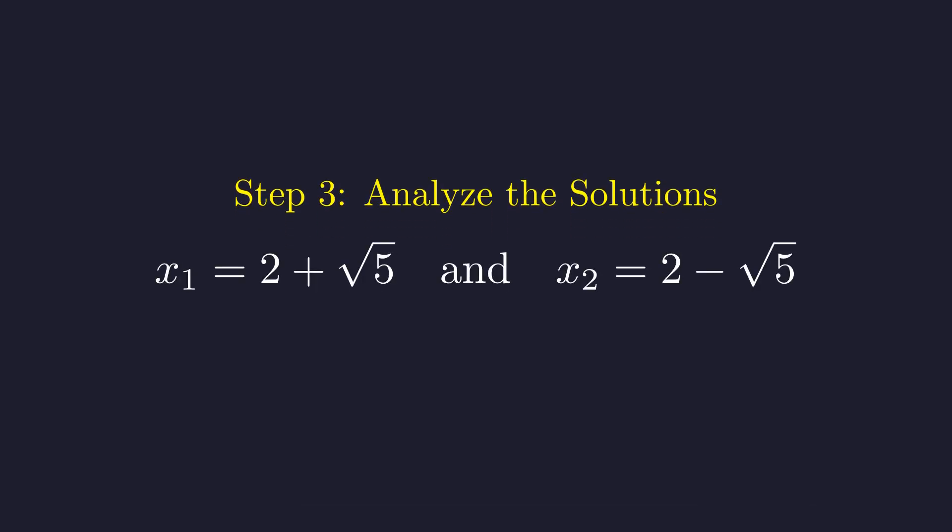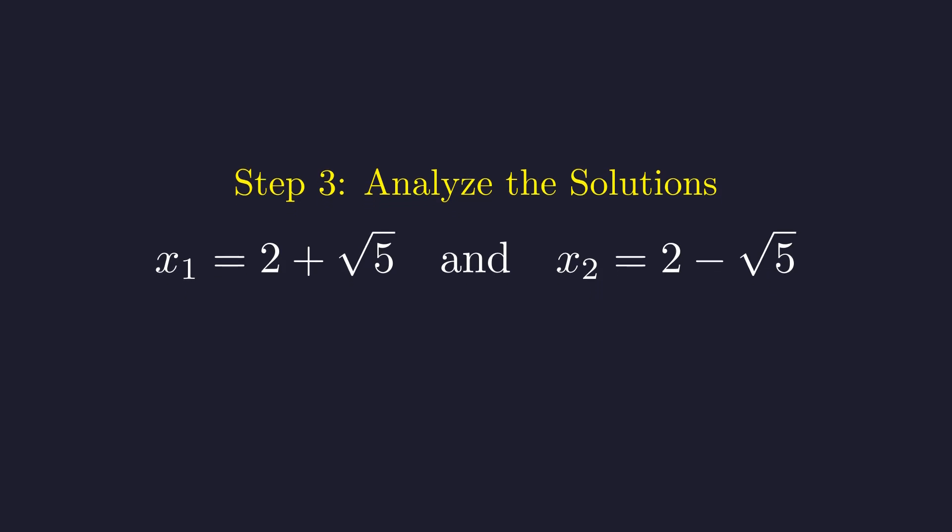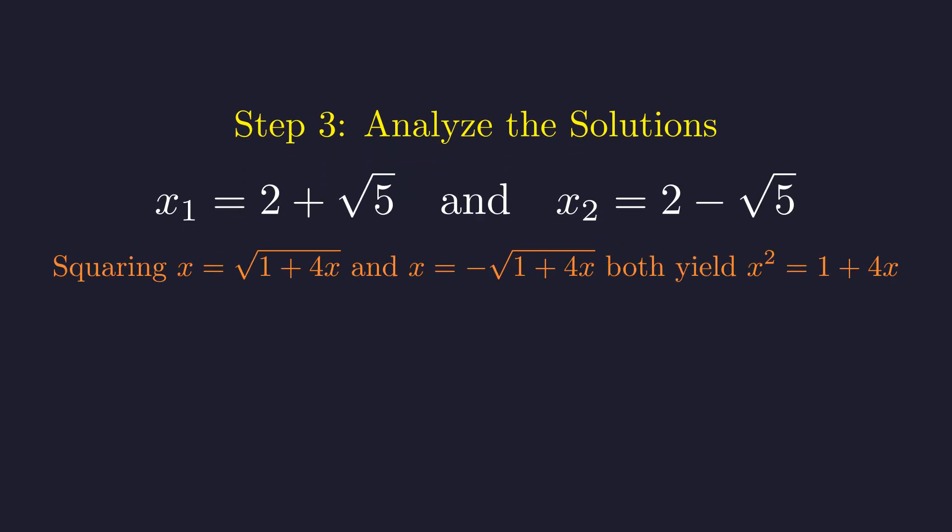Our two potential solutions are 2 plus the square root of 5 and 2 minus the square root of 5. Here's what happened. When we squared both sides earlier, we accidentally created an extra solution. Squaring can merge two different equations into one.